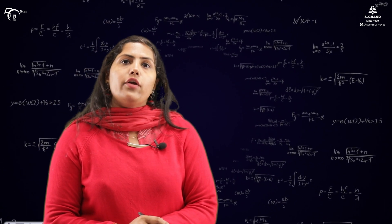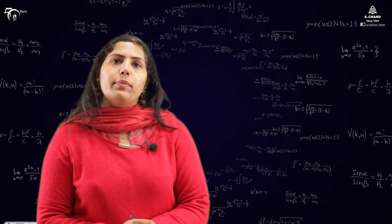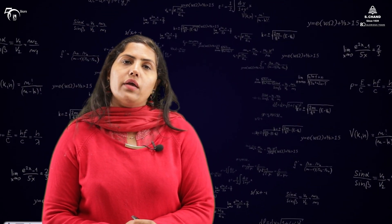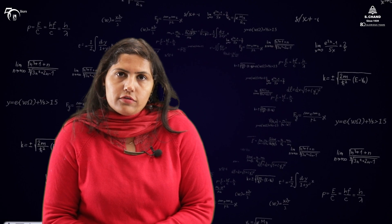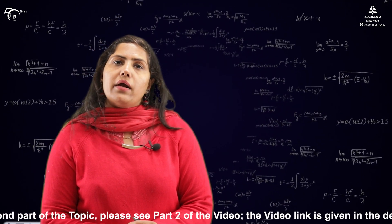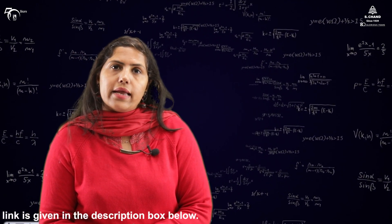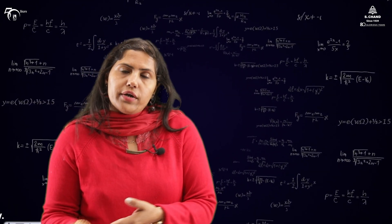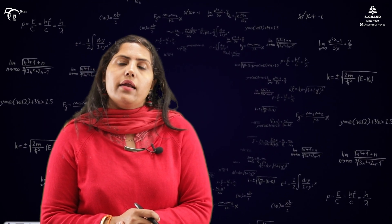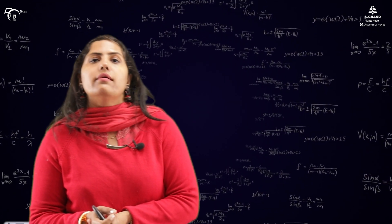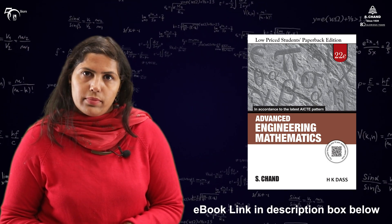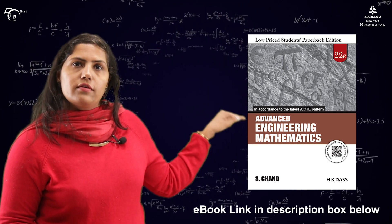So this is the end of Part 1. In Part 1, we completed the theoretical definition of rank. Then, because we need minors to find rank, we learned how to find minors for a matrix. In Part 2, we will be taking examples of different types of matrices and finding the rank for each. If you want to study this topic in detail, please refer to the book by S. Chand Publishing — the e-book link is given in the description box below.